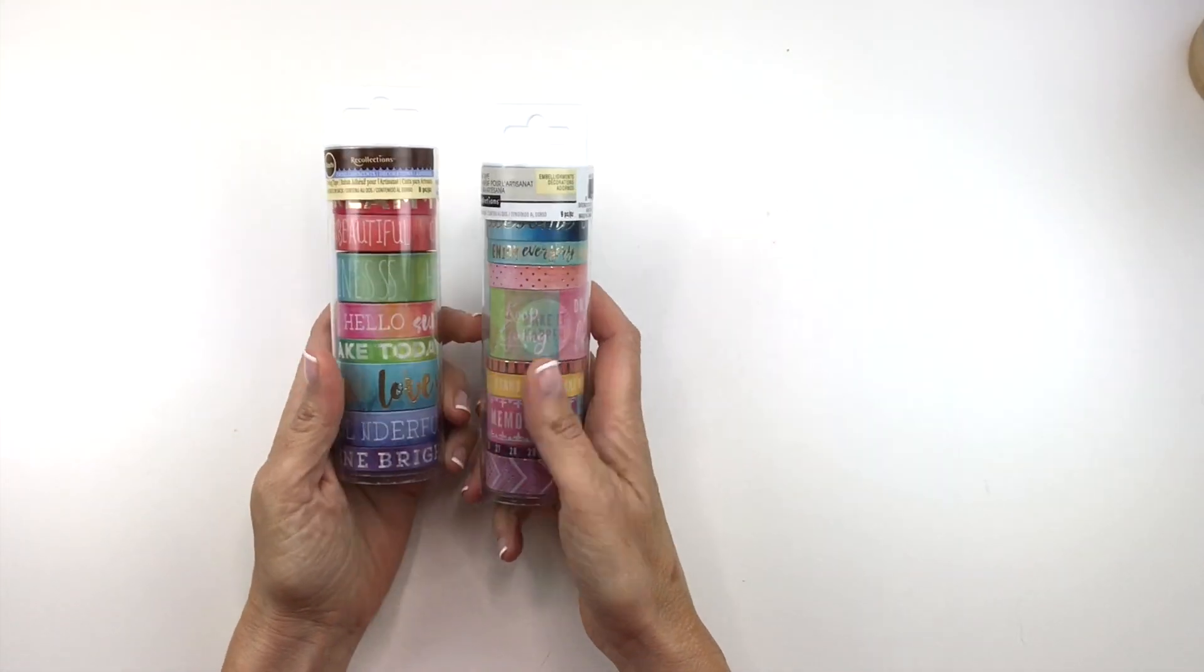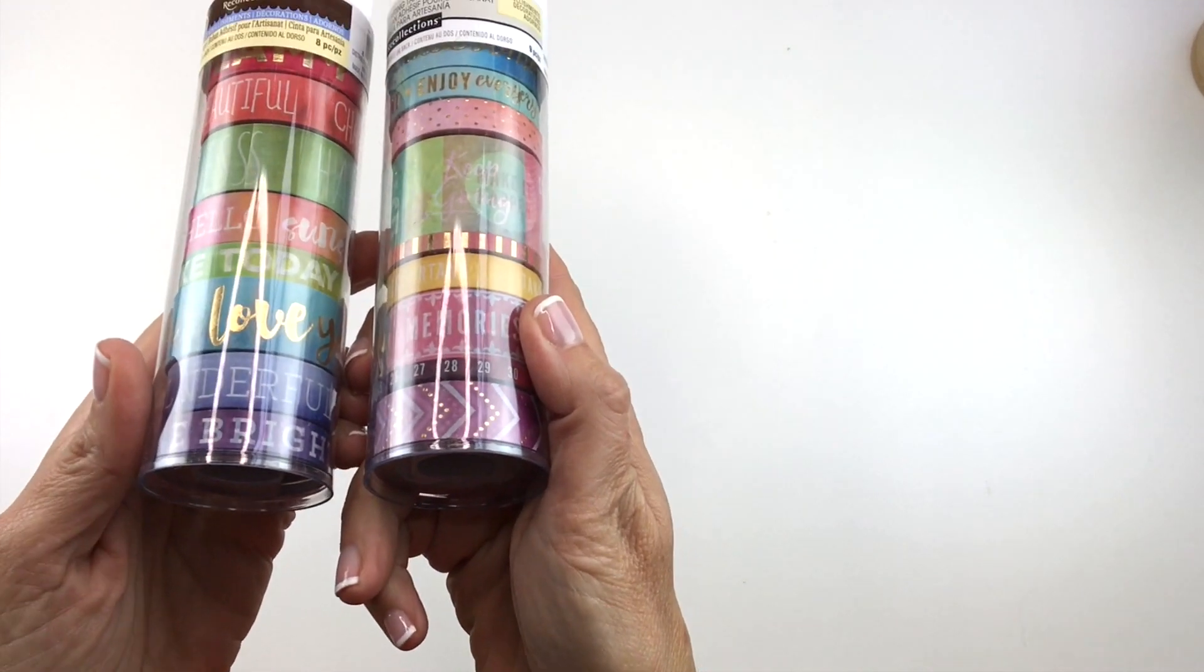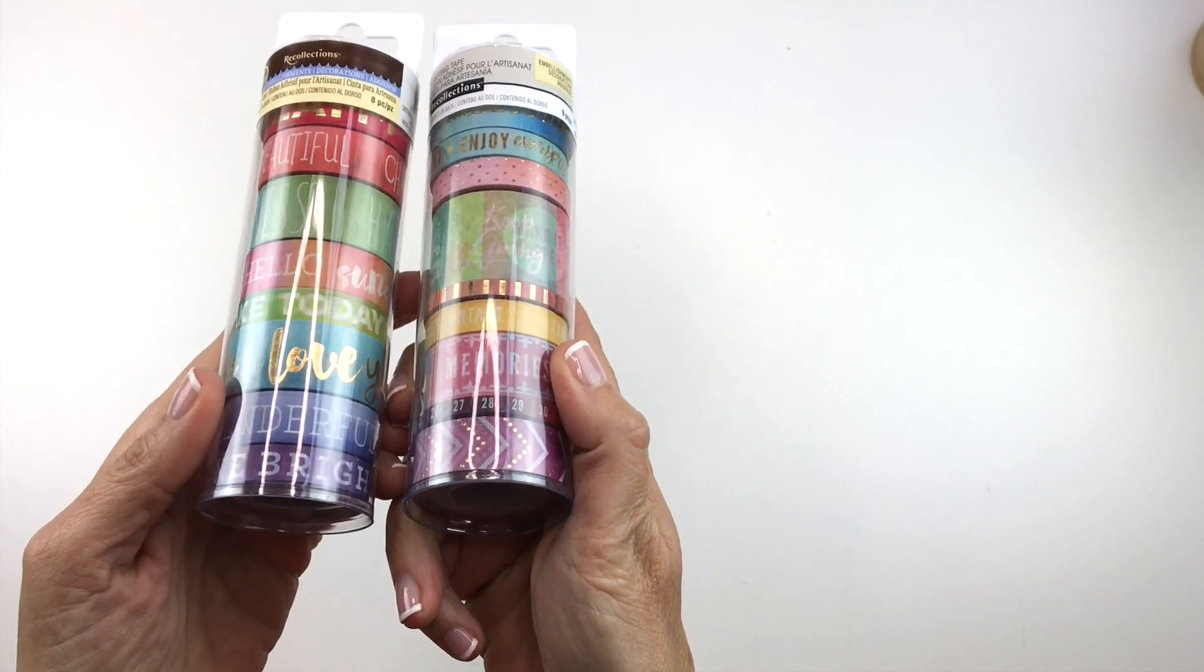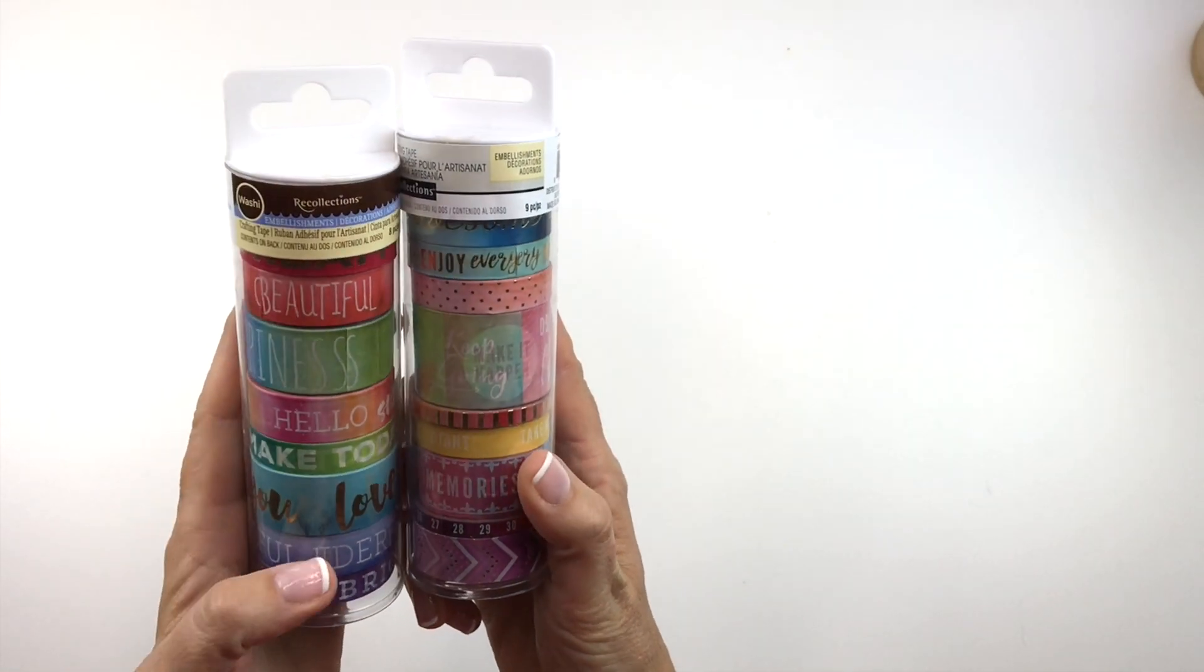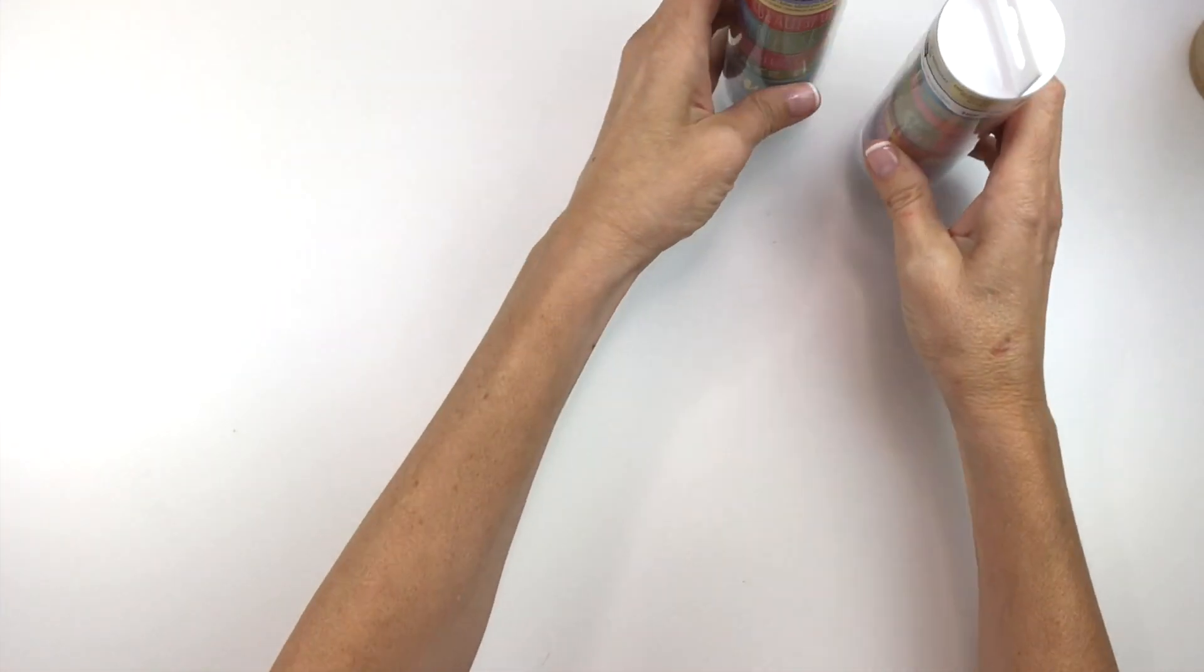So first I will go through some stuff. I got it Go Wild. So here's some recollections washi tape. You'll get both of these babies. They're really cute, bright and colorful. They have a lot of quotes and sayings on them.